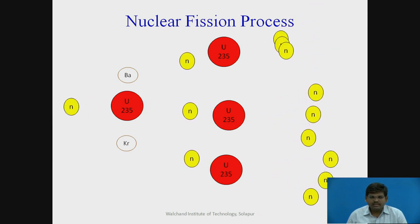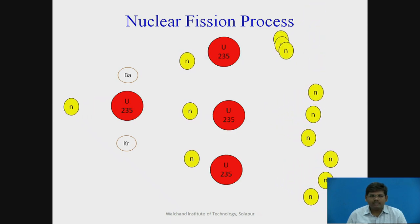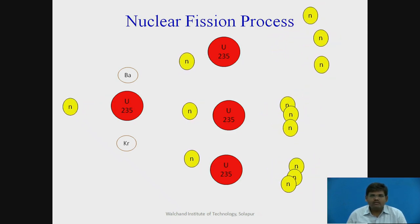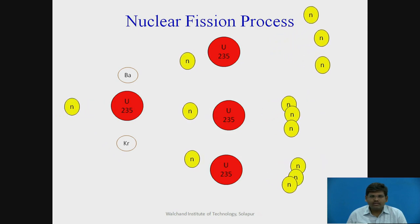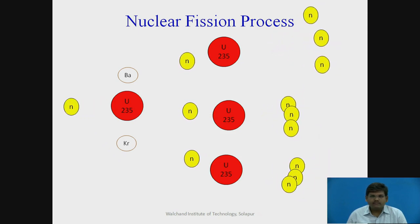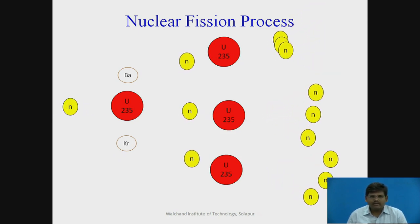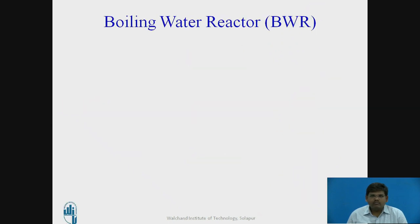Due to the splitting of the Uranium nuclei, a large amount of energy is generated which can be used for generation of steam. As this reaction continues until the Uranium nuclei are totally exhausted, this is the reaction responsible for generation of steam in nuclear power plants. As far as nuclear power plants are concerned, there are two types: first, the boiling water reactor type, and second, the pressurized water reactor type.